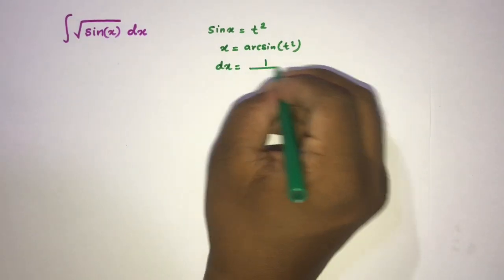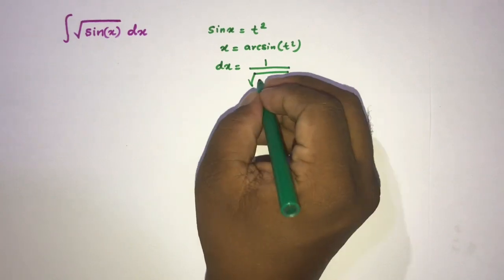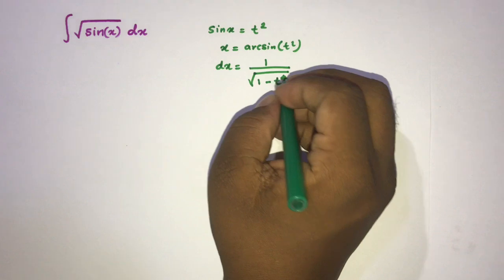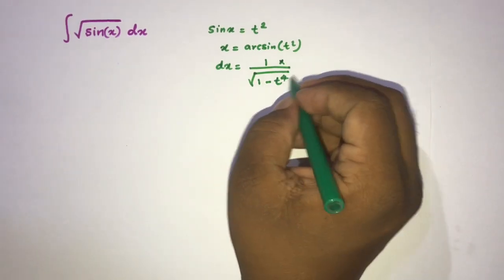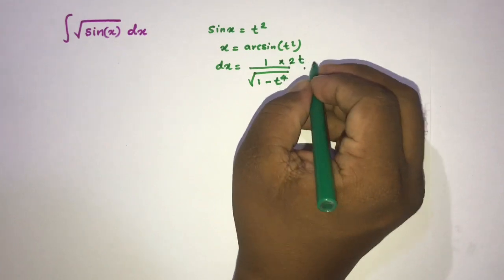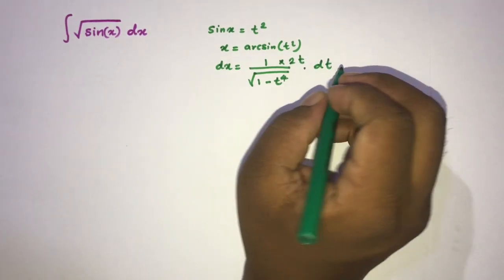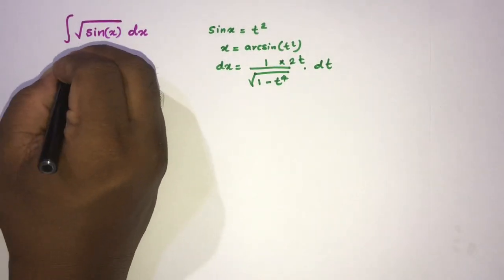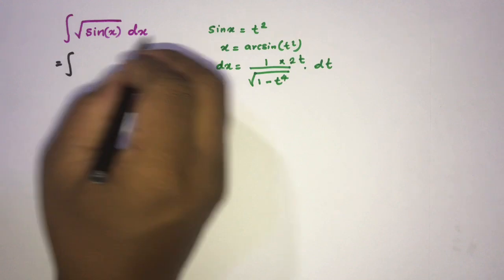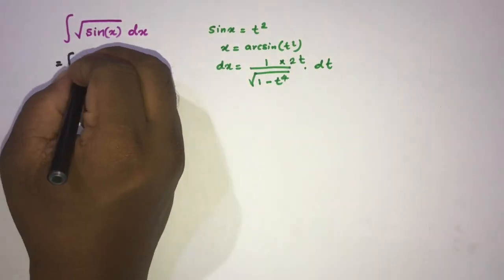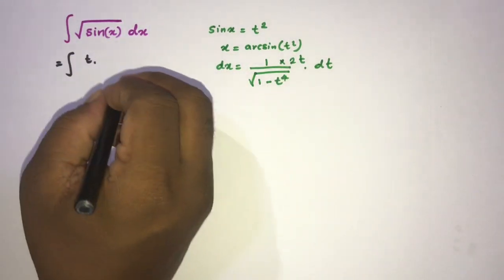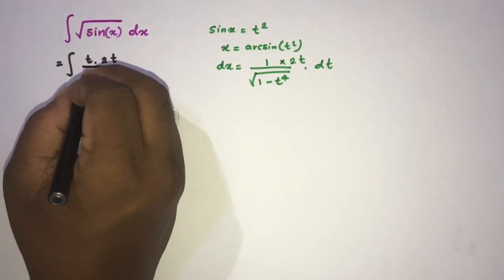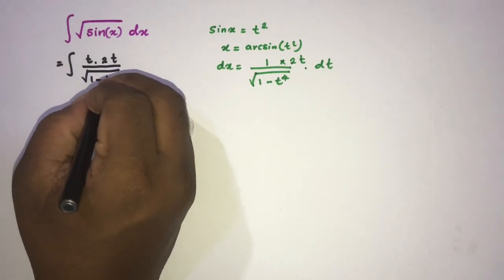Here the angle is t squared, so we get 1 over square root of 1 minus t to the fourth power. By the chain rule we multiply by the derivative of t squared, which is 2t, giving dx = 2t over square root of 1 minus t to the fourth power, dt. Substituting into the integral: square root of sine of x becomes t, and we multiply by dx.